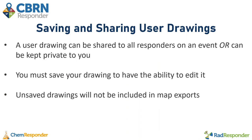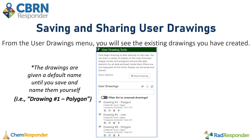A user drawing can be shared to all responders on an event, or kept private just to you. You must save your drawing to have the ability to edit it, and any unsaved drawings will not be included in map exports. To save your drawings, make sure the user drawings menu is open. Drawings are given a default name listing them in a number format along with the shape type, and it also lists the created by and timestamp.